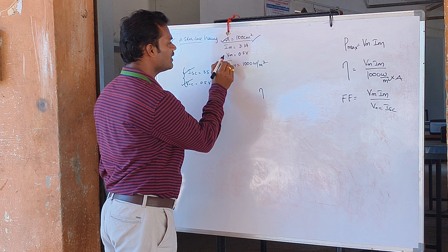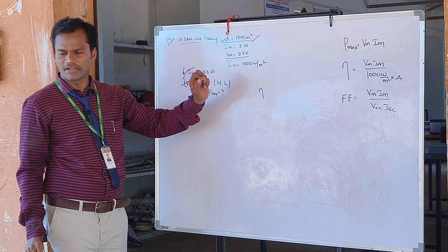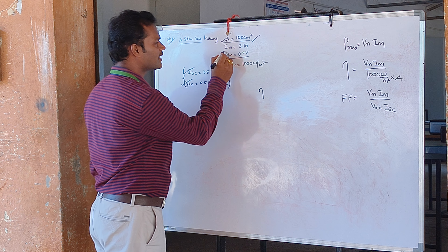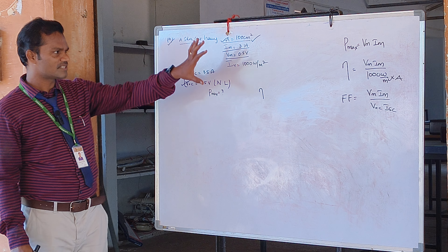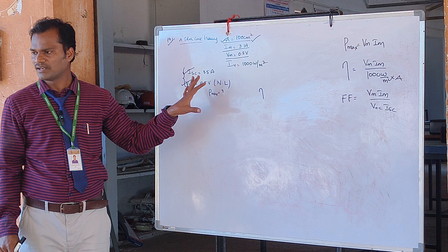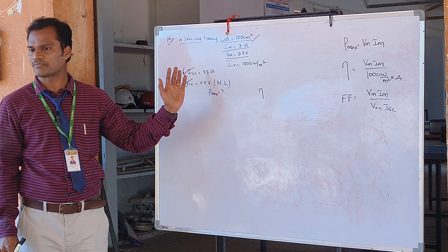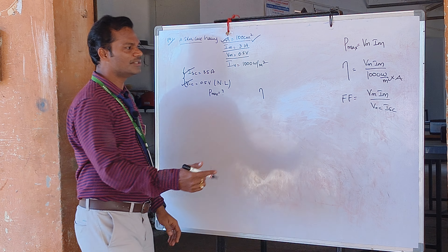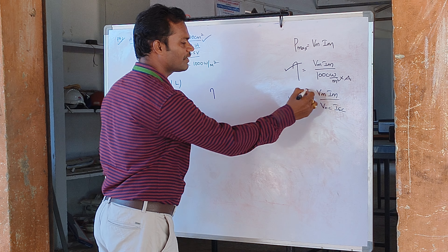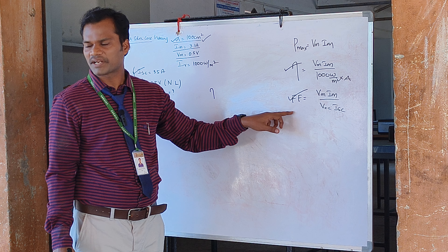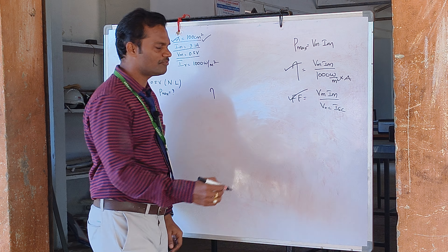It is mentioned on the panel that it can generate a maximum voltage at MPP of 0.5 volts and a maximum current of 3.1 ampere. Given a panel with these specifications, we want to identify whether it is a good or bad panel, or what the aging effect is. The performance indices of a solar panel are identified by two parameters: first, fill factor; second, efficiency of the solar panel.